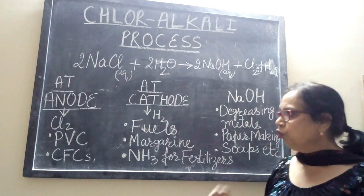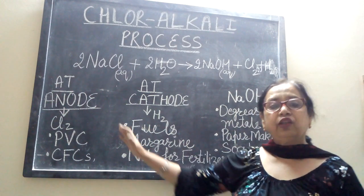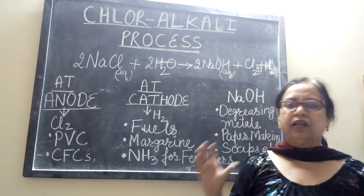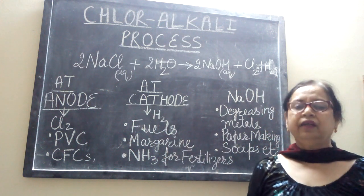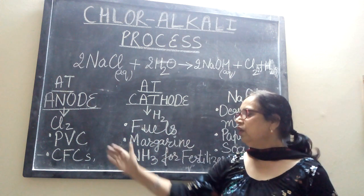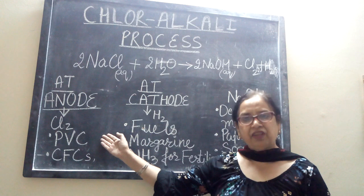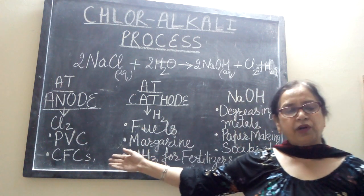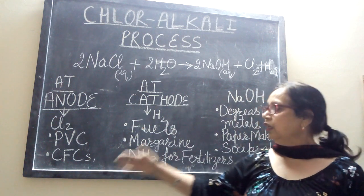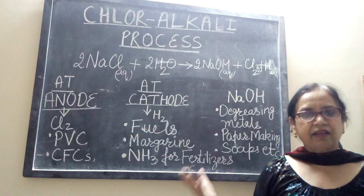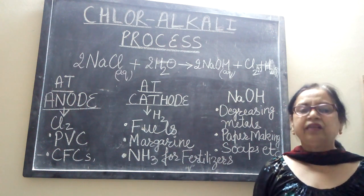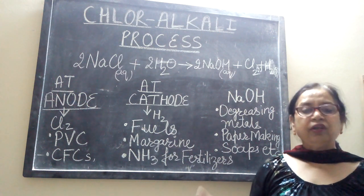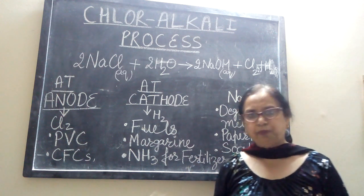This chlorine gas is used in the preparation of PVC — that is polyvinyl chloride — and many things we use today are PVC-based. It is also used in the production of CFCs, as an oxidizing agent, and as a disinfectant in swimming pools.